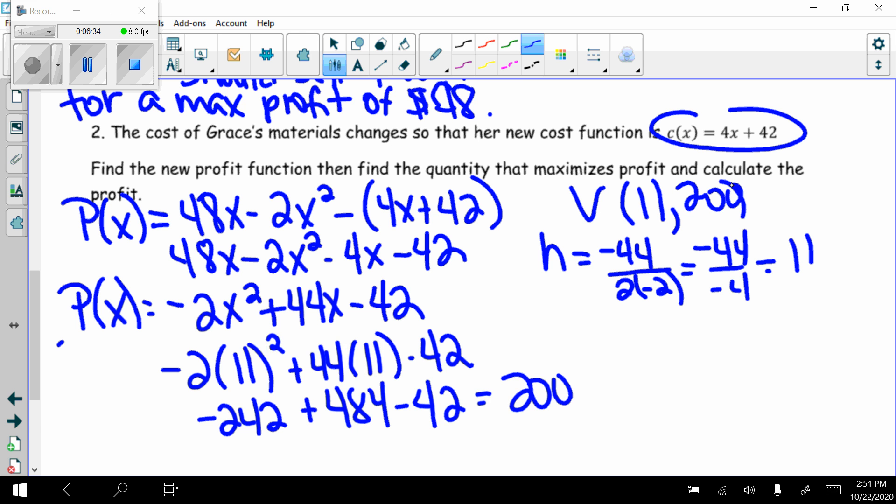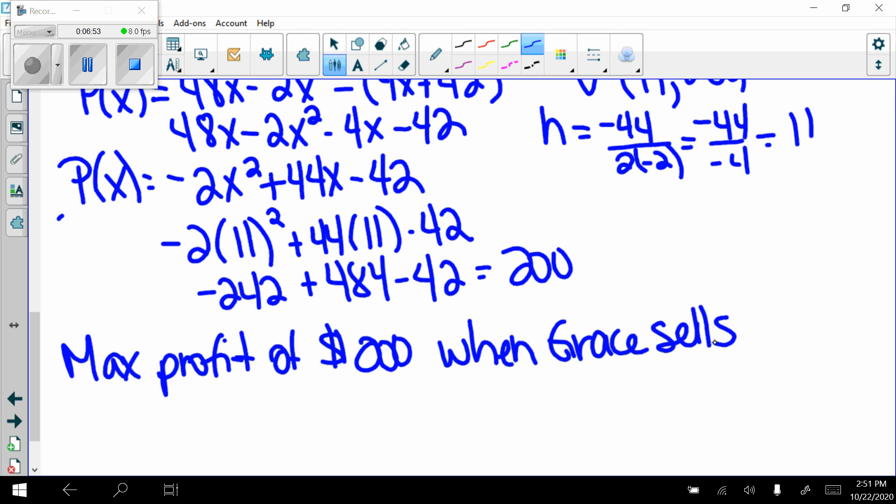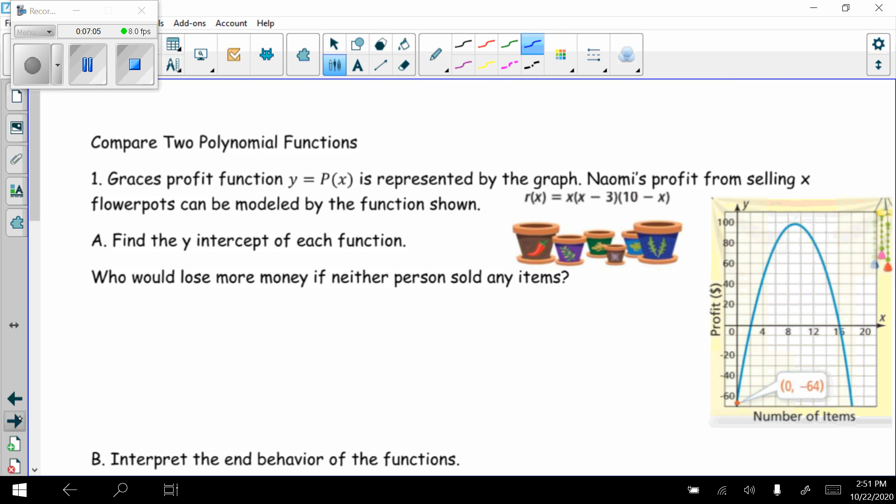So find the new profit function, I did that. Find the quantity that maximizes the profit. The maximum profit of $200 when Grace sells 11 wind chimes. So now let's turn it over and look at some more word problems. This time we're going to be comparing two polynomial functions.